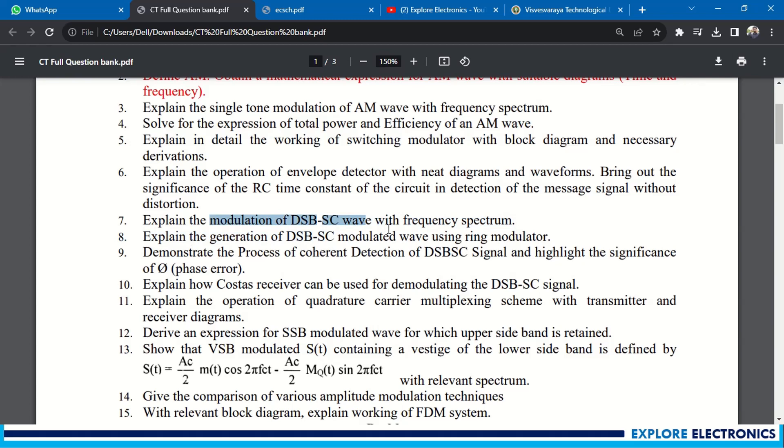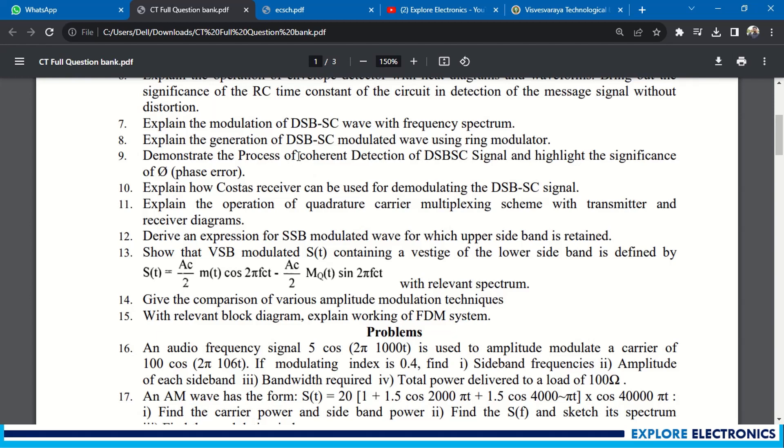Coming to DSB-SC: explain modulation of DSB-SC wave with frequency spectrum. Explain the generation of DSB-SC modulated wave using ring modulator - this is also asked many times. Coherent detection: demonstrate the process of coherent detection of the DSB-SC signal and highlight the significance of phase error. Explain the Costas receiver used for demodulation in DSB-SC signal.